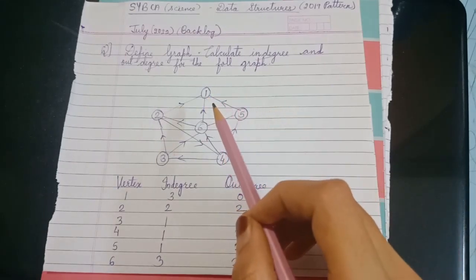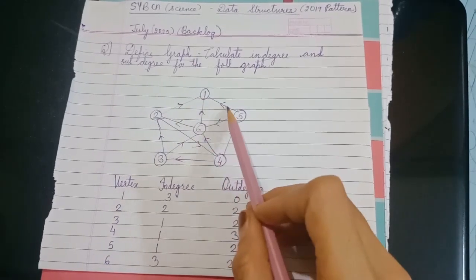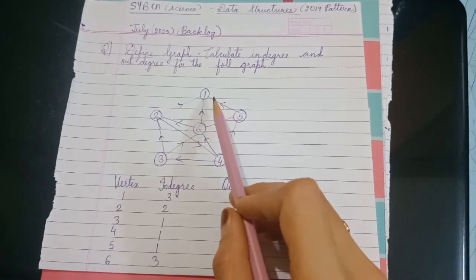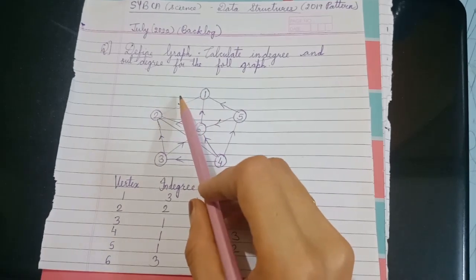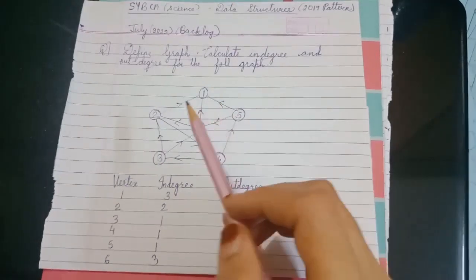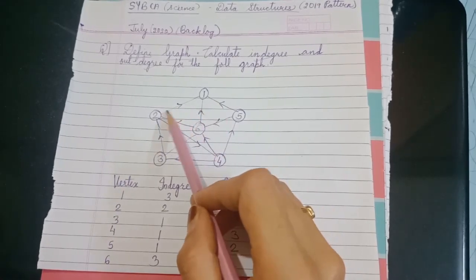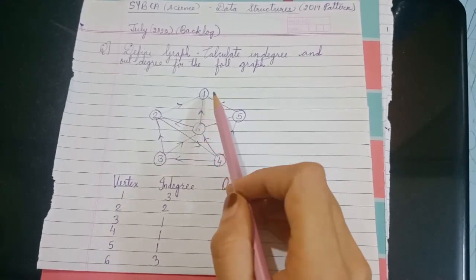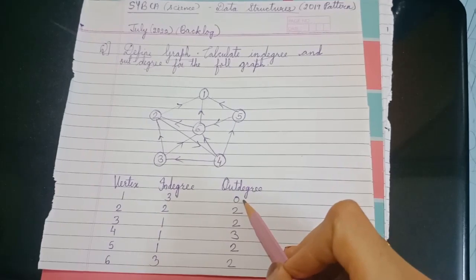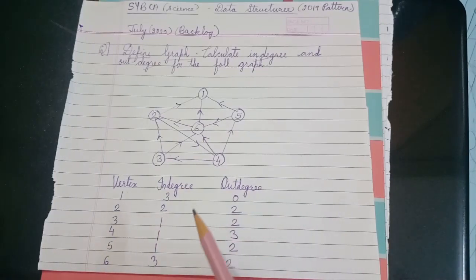Now let's calculate for vertex one. There are three edges: one, two, and three. The arrows — that is, the directions — are coming towards vertex one, which means there are three in-degrees. To calculate out-degrees: all three edges are coming towards vertex one and not going out, so there is no out-degree. We write zero. So for vertex one, in-degree is three and out-degree is zero.